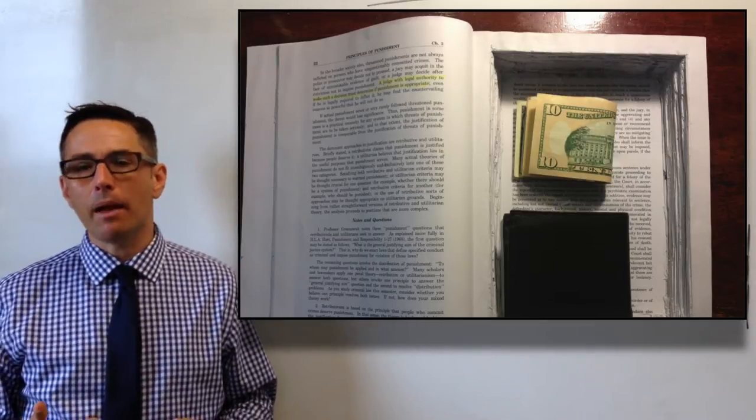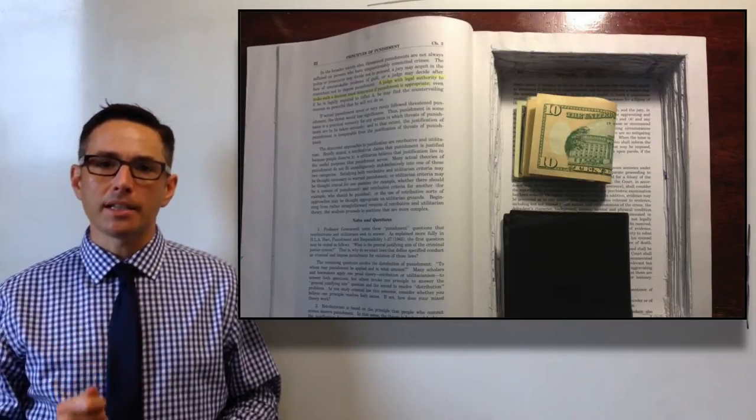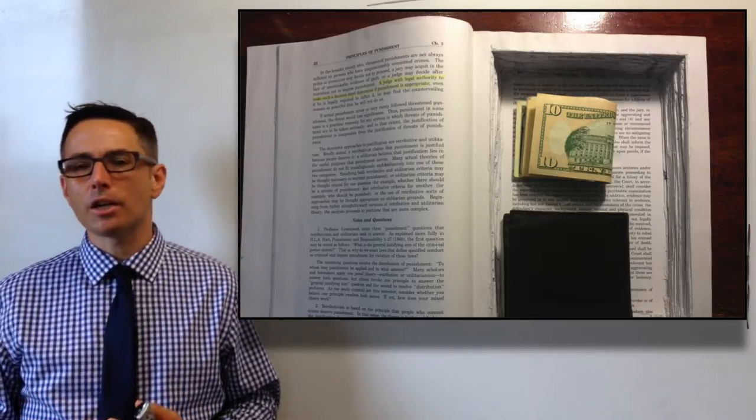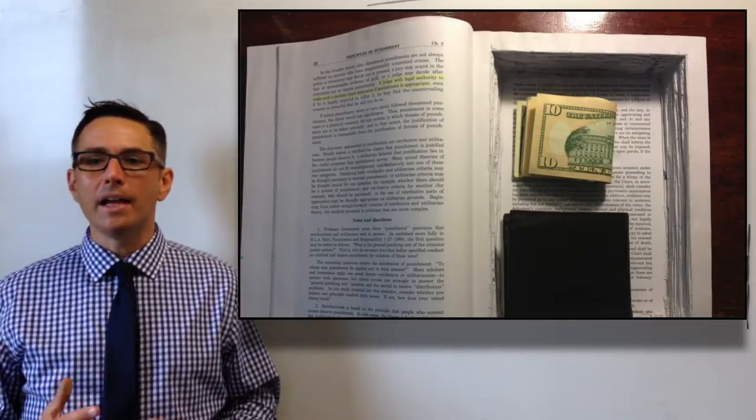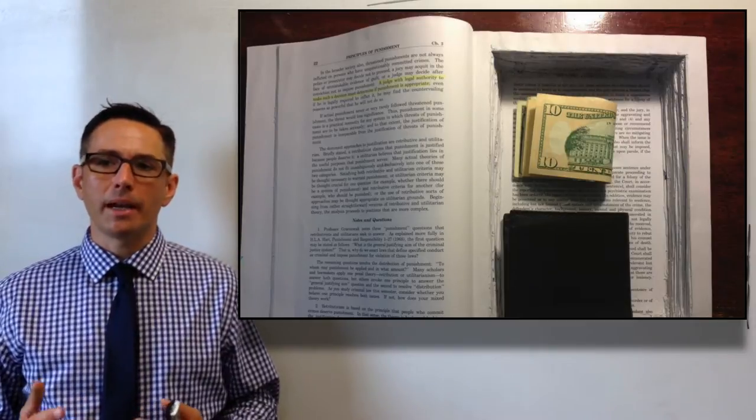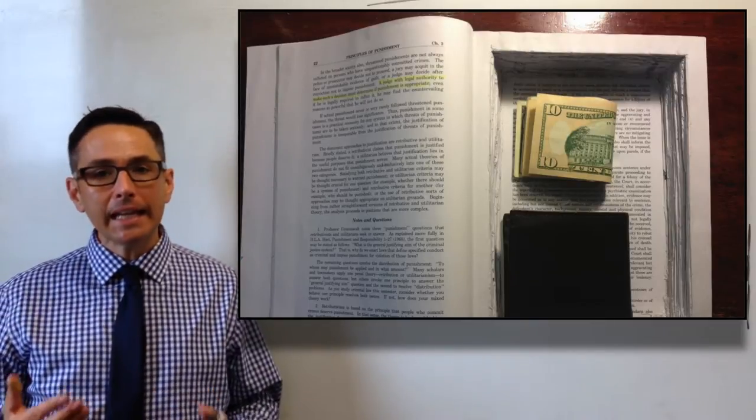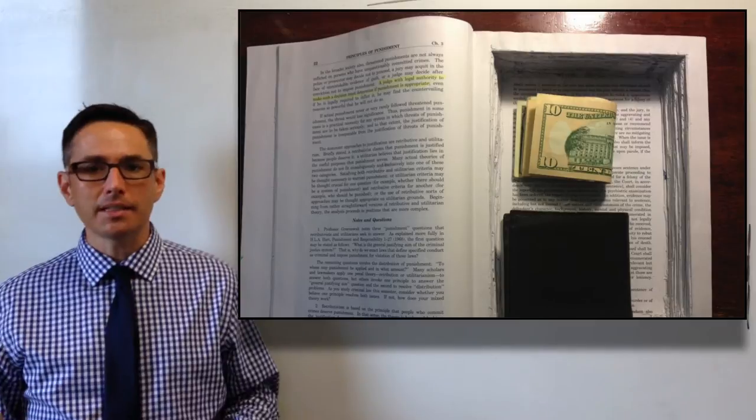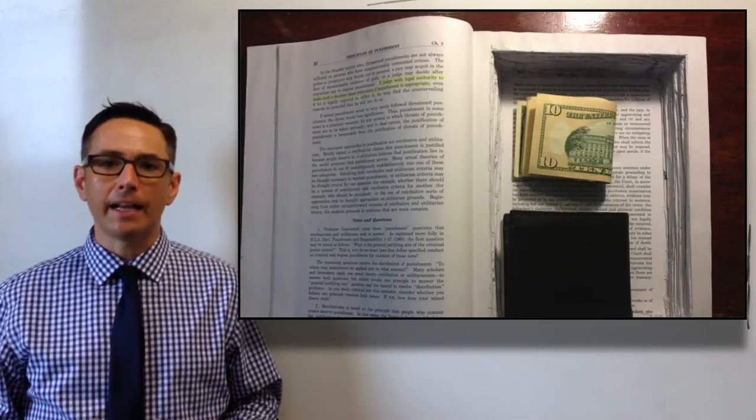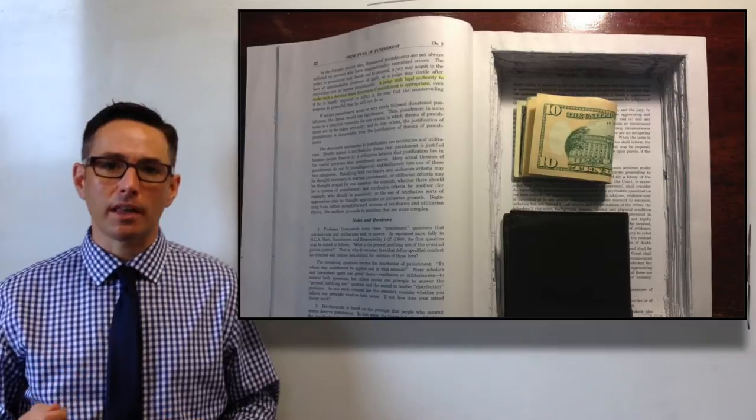What you should imagine this is like in the real world is a book that has had the pages hollowed out so it can serve as a secret hiding place. Maybe you could put money or a passport in it. You would put the money in this hollowed out book, close the book, and put it on the bookshelf. This is an analogy to security by obscurity because as long as no one knows which book on the bookshelf is that secret hollowed out book, your money is safe. The problem is that if it's ever found, your money's gone.